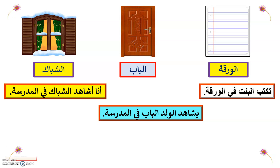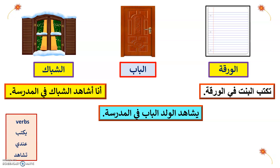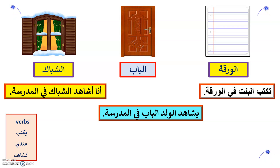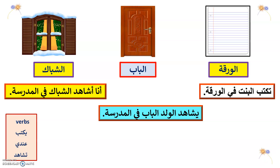Now I'm giving you some verbs you can use to create your own sentences at home. 'Yaktub' means 'he writes.' So you can say: Alwalad yaktub — the boy writes. Or: Ana aqtub fi alwaraka — I write on the paper.